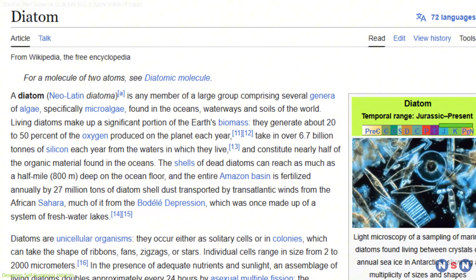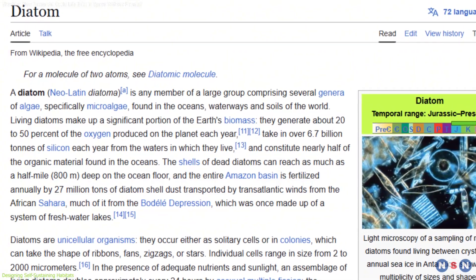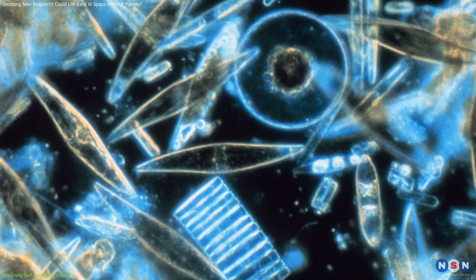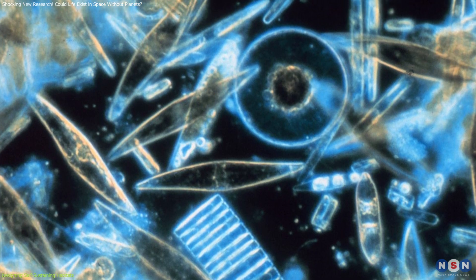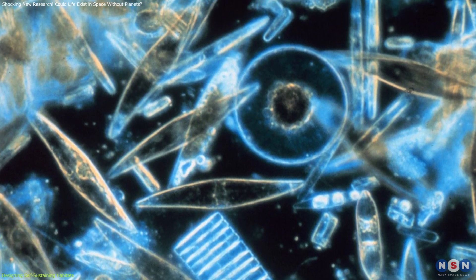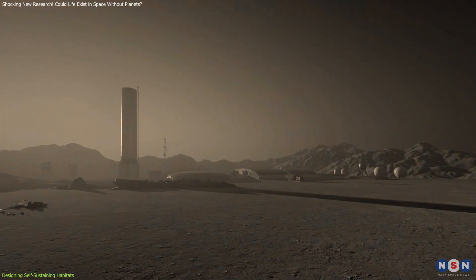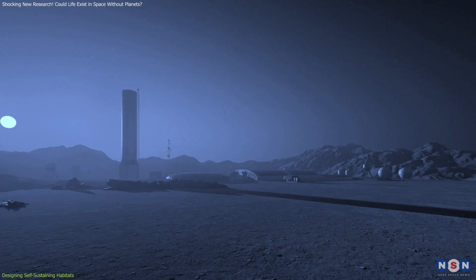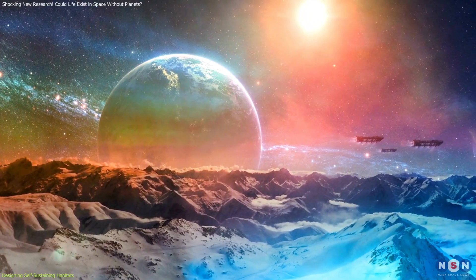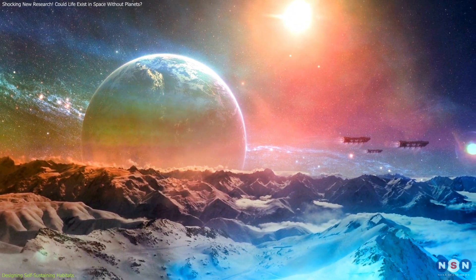Interestingly, some organisms like diatoms naturally produce silica structures, hinting at a biological root for insulating materials. These structures could protect extraterrestrial habitats from extreme temperature fluctuations, enabling life to thrive in otherwise inhospitable environments.